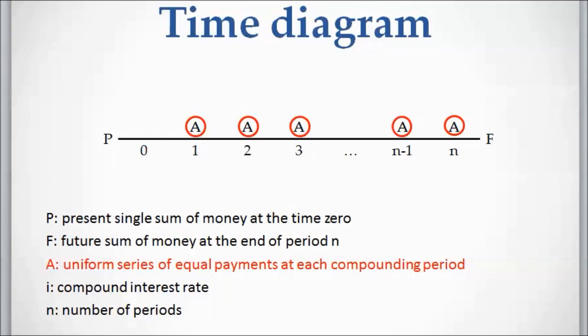The other parameter is A. Above each time period, starting from year one to year n, there is an A, which are called uniform series of equal payments at each compounding period. These A's show the money that is paid or received in those time periods. Here we assume all of them are equal payments.